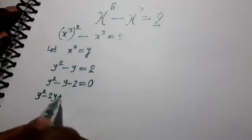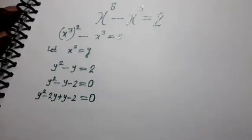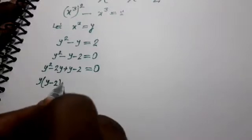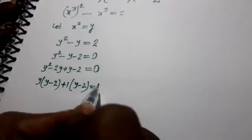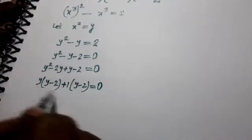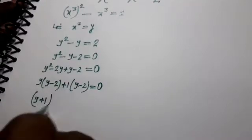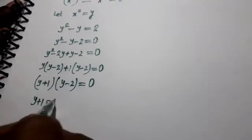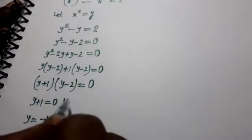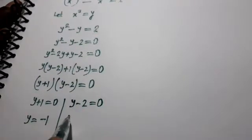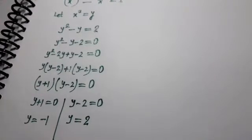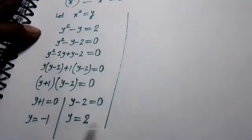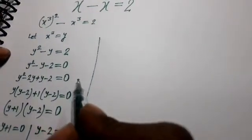So y squared minus 2y plus y minus 2 equal to 0. Taking y as common: y(y minus 2) plus 1(y minus 2) equal to 0, giving (y plus 1)(y minus 2) equal to 0. So y plus 1 equal to 0 gives y equal to minus 1, and y minus 2 equal to 0 gives y equal to 2.